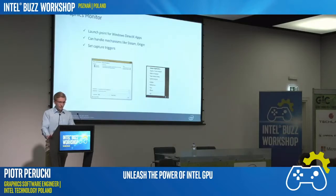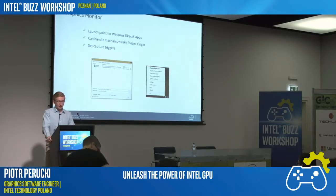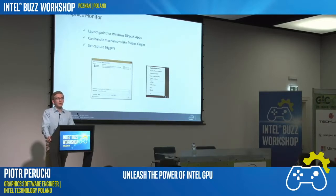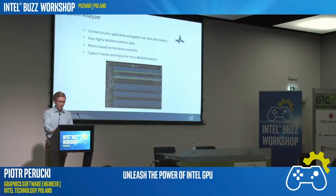Let's meet our analyzers. Graphics Monitor is used to launch your application. It supports even complicated starting mechanisms like Steam and Origin. The powerful feature of this tool is that it allows setting capture triggers. Let's imagine your game is running at 60 FPS and you get some random FPS drops. You can set it so that whenever the FPS drops below a certain threshold, the frame is captured for further analysis.